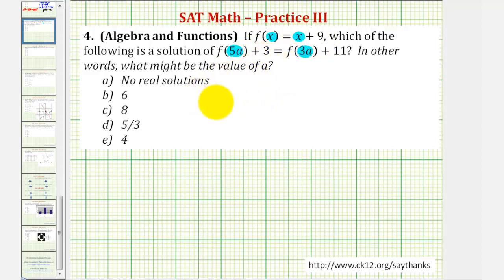So our equation would be five a plus nine. Notice how we still have plus three equals, and then for f of three a, we substitute three a for x. So instead of x plus nine, we would have three a plus nine, and then we still have plus 11.